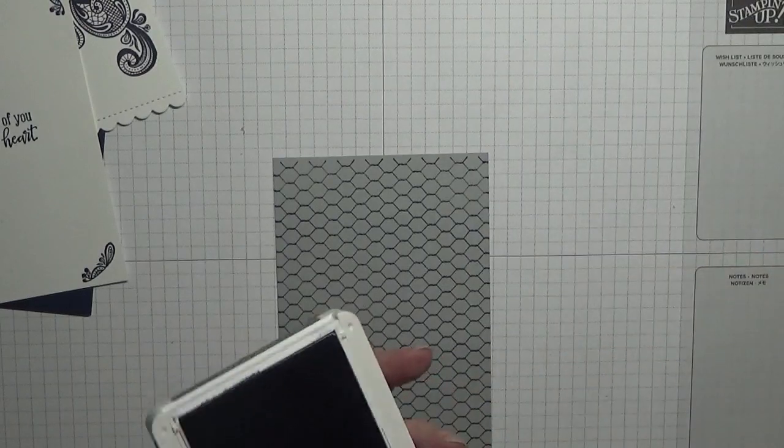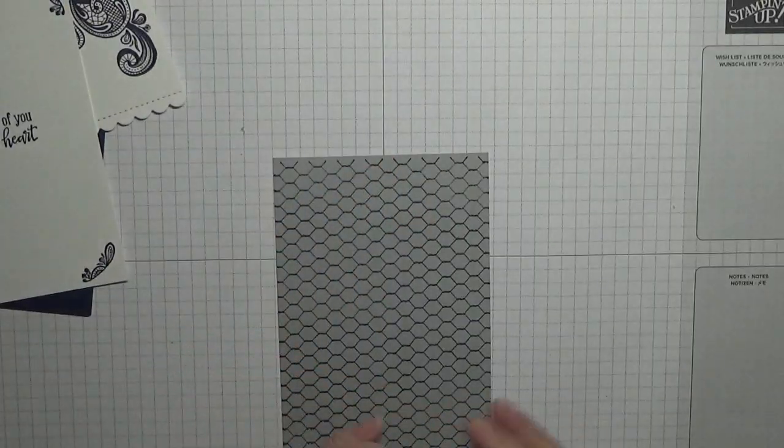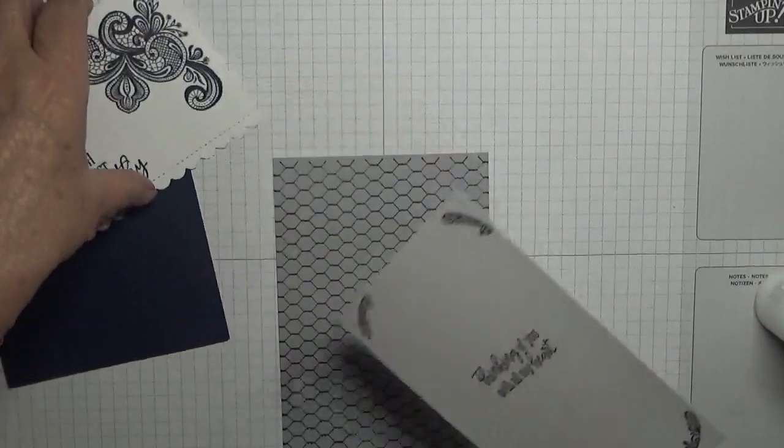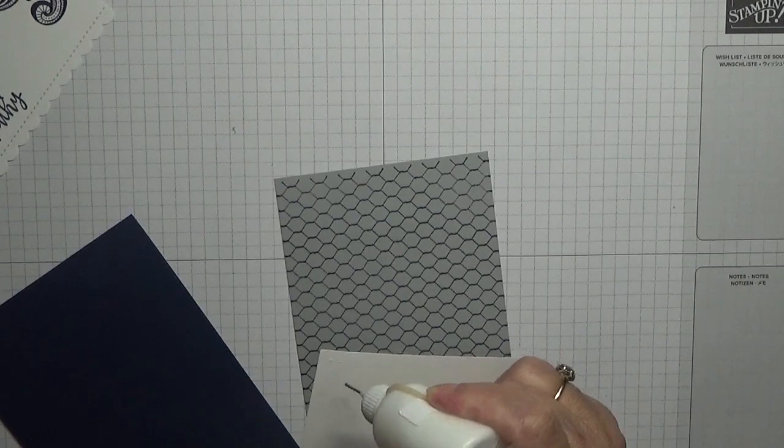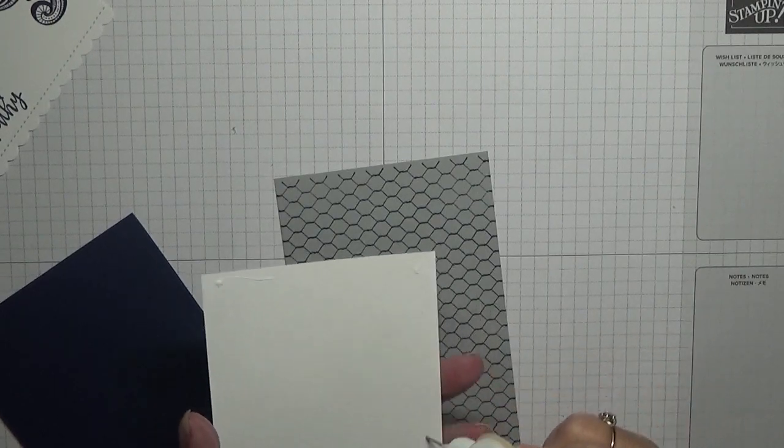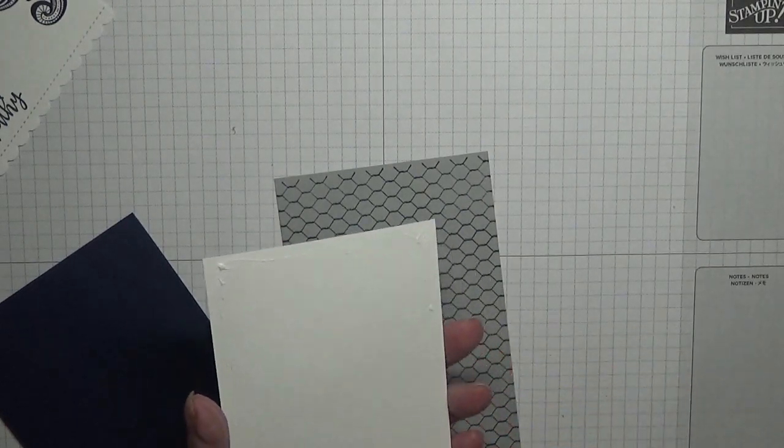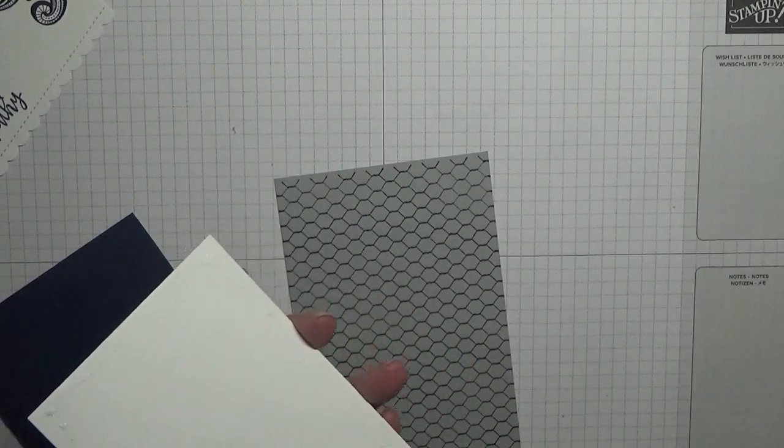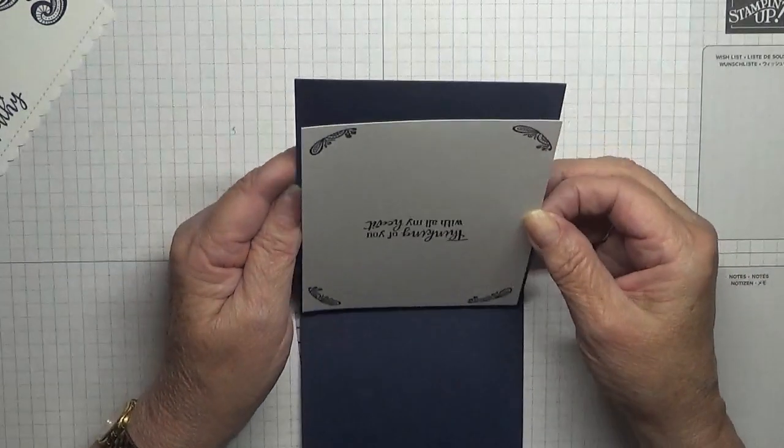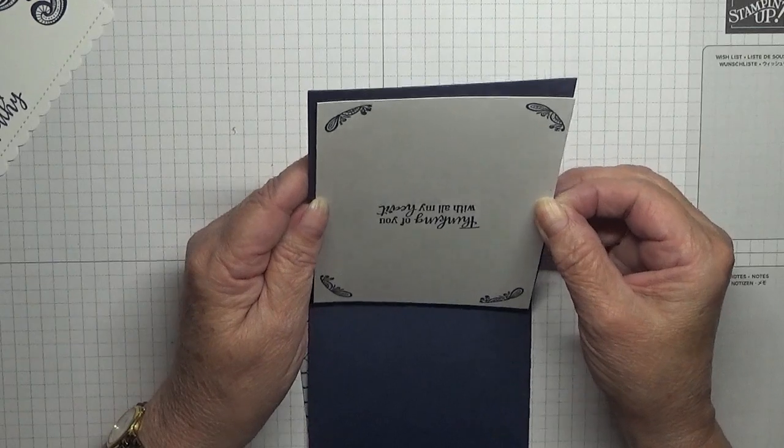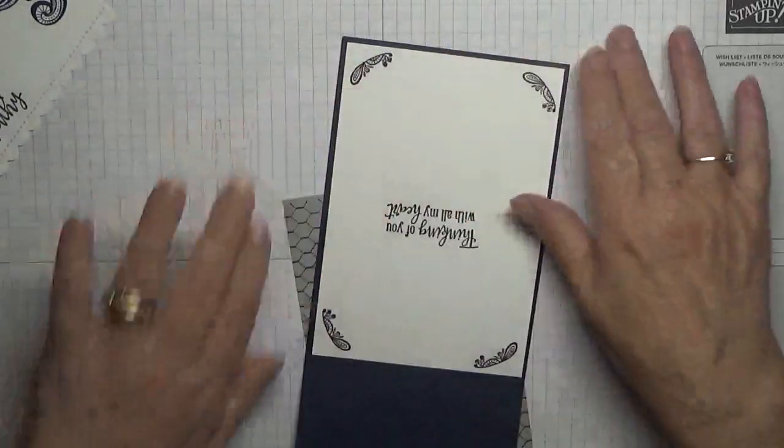So that is our inking done. All we've got to do is put the whole card together. So what we're going to do is put this inside bit in first. I thought my glue was bought then because it's the first time I've used it today. In fact, it's the first time I've used it for a few days. I haven't made any cards for a few days. I've been busy on another project.